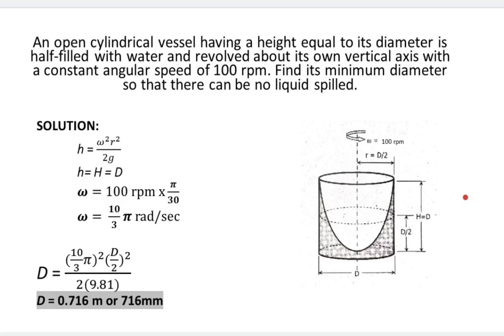Good day everyone. I'm here to discuss problem solving from the Gillesanya book Fluid Mechanics and Hydraulics, Chapter 4: The Relative Equilibrium of Liquids. The problem is: an open cylindrical vessel having a height equal to its diameter is half-filled with water and revolved about its own vertical axis with a constant angular speed.